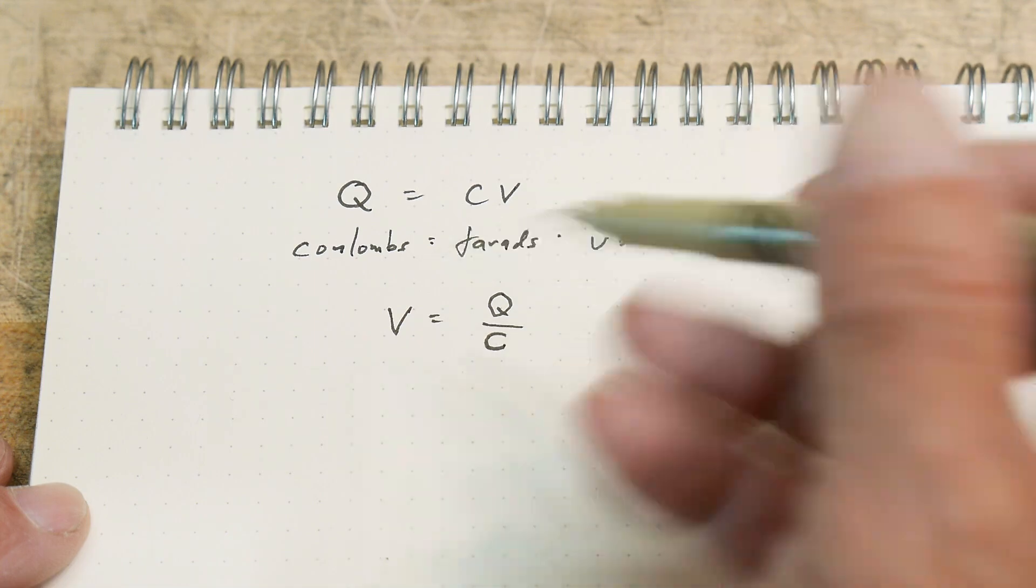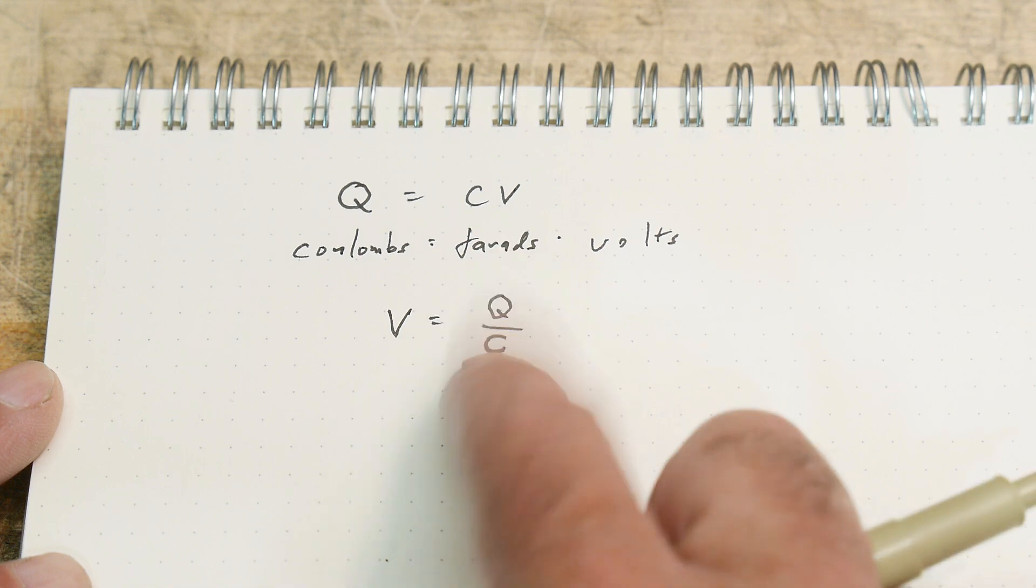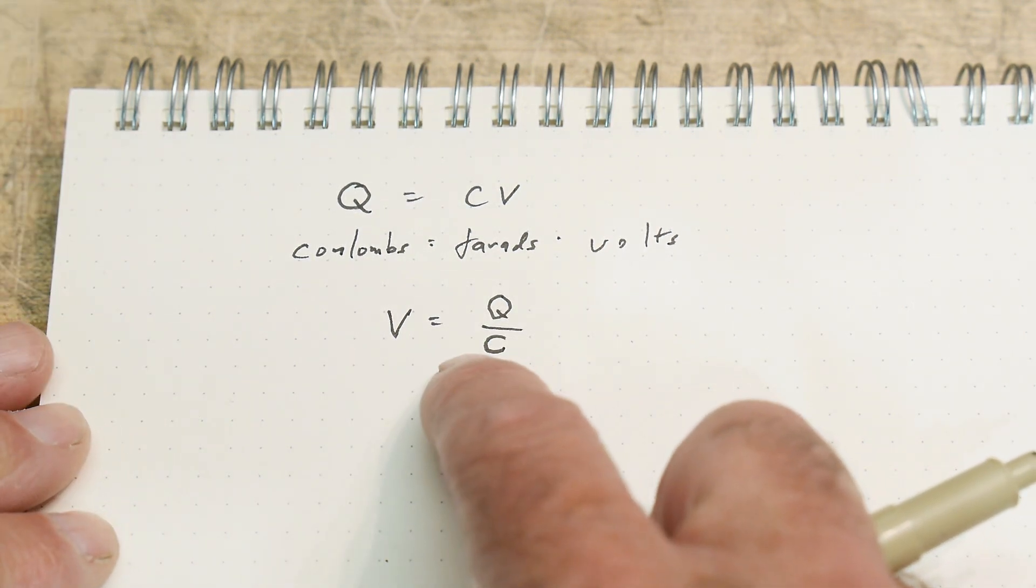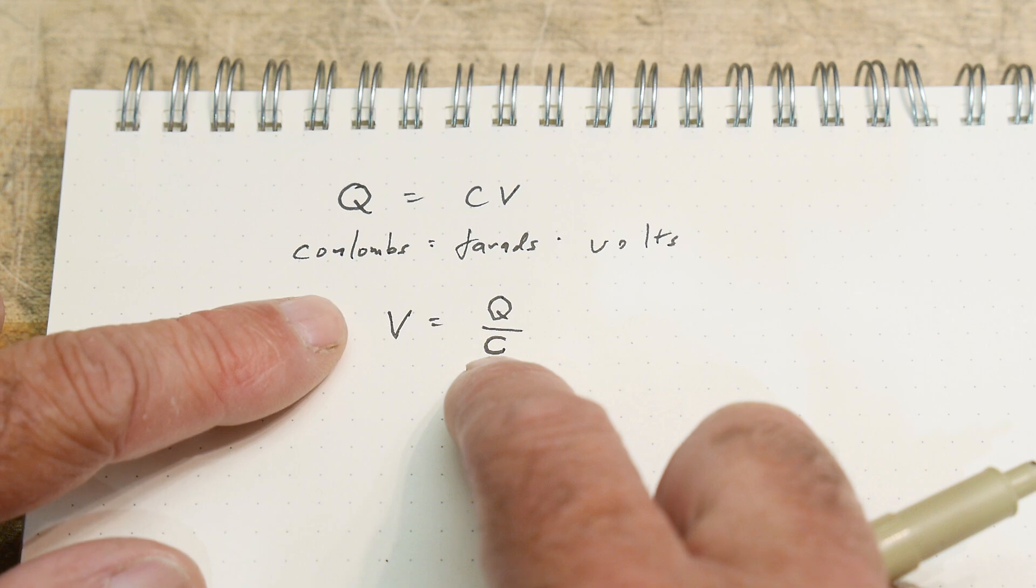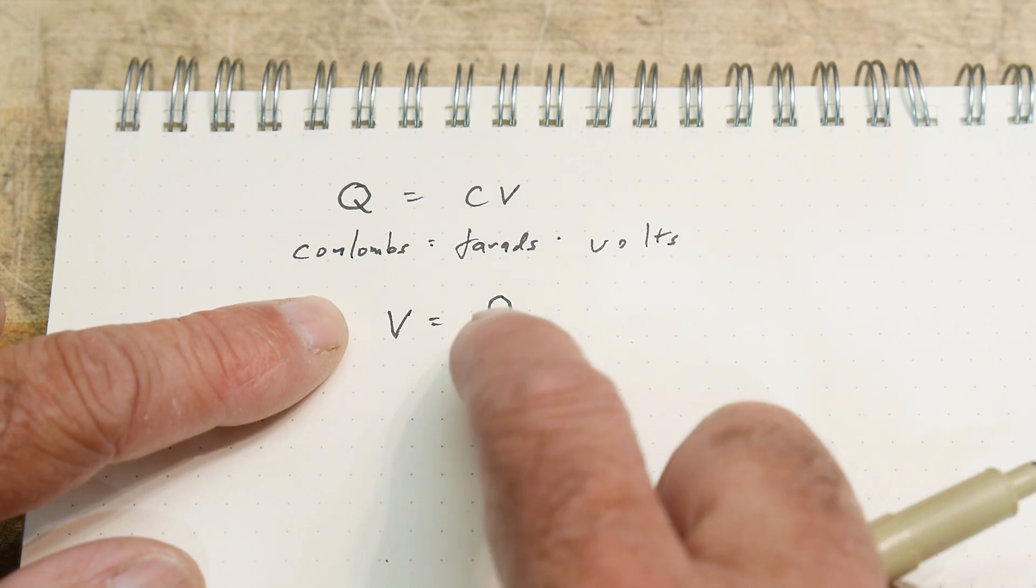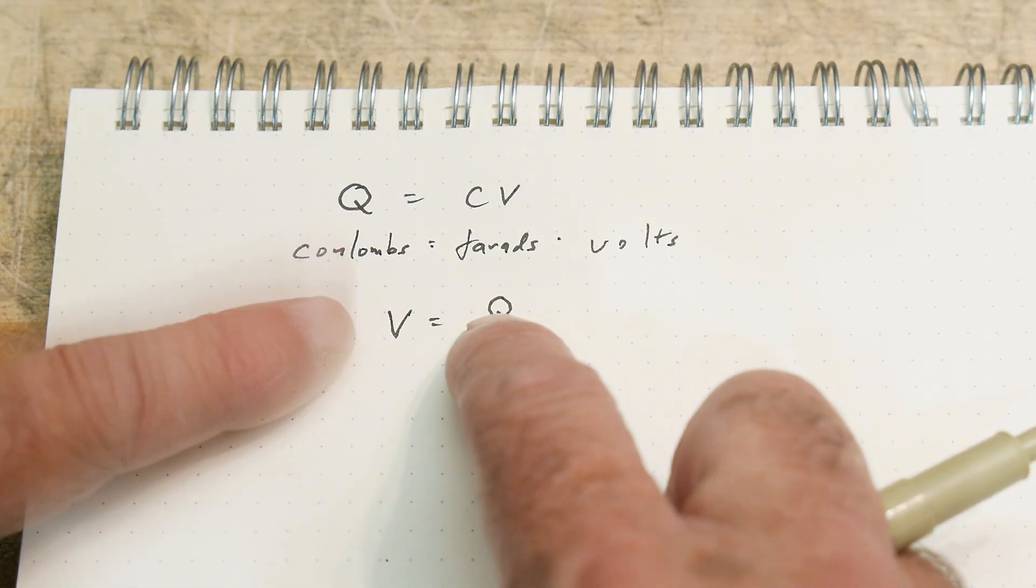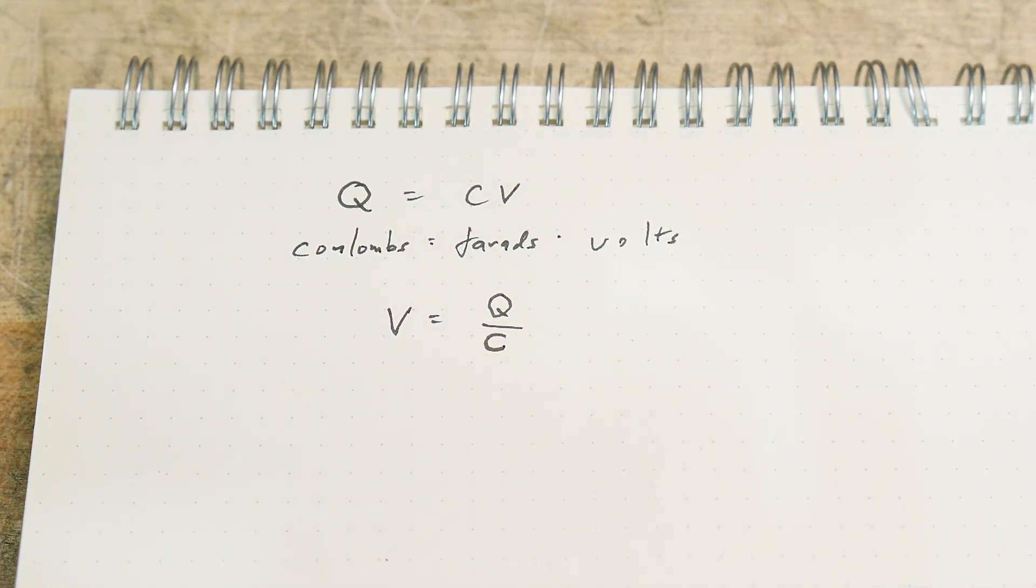Most of the time we look at it as volts equals charge over capacitance. So if the capacitance goes up, the voltage goes down, and if the capacitance goes down, the voltage goes up. Or if the charge goes up, the voltage goes up. The charge goes down, the voltage goes down. That all makes sense.